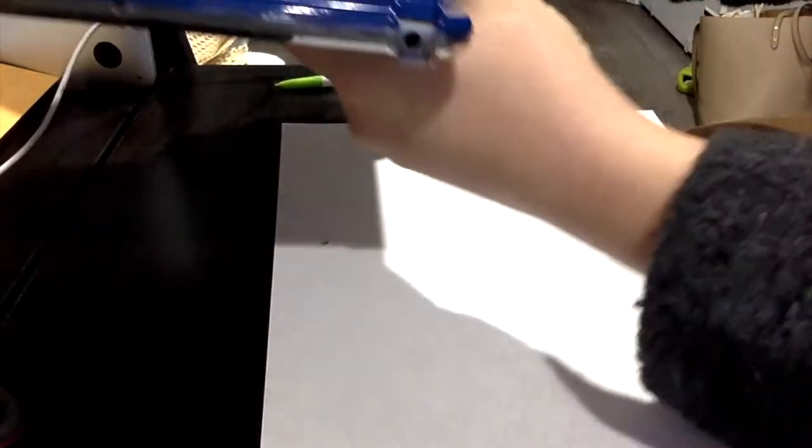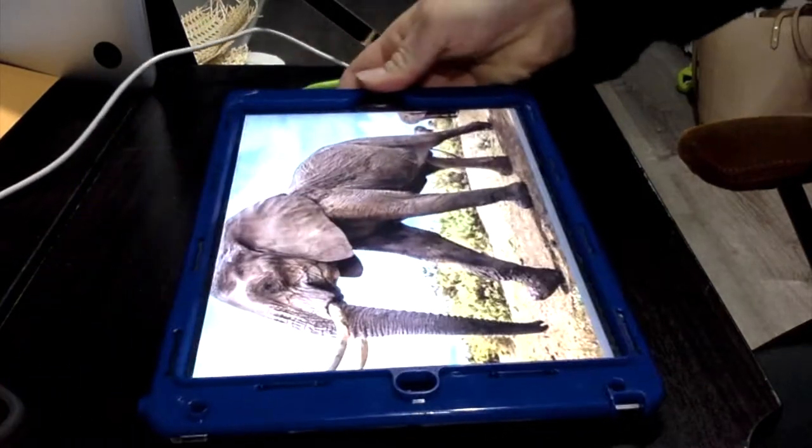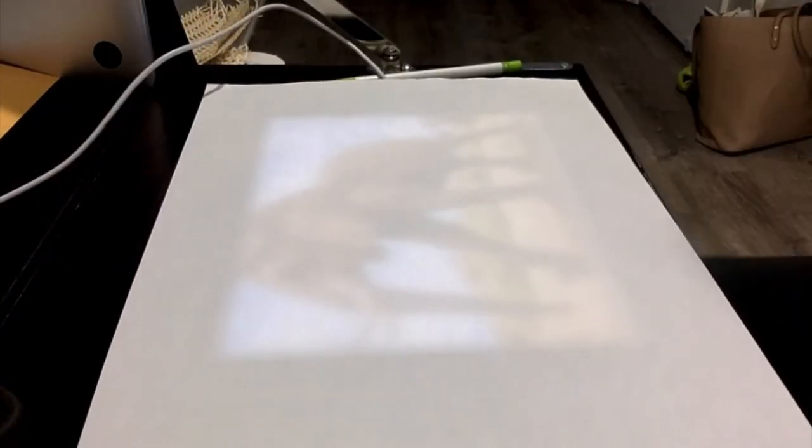When tracing, press lightly and add outlines around features like the eyes, the ears, the legs, and the tail.